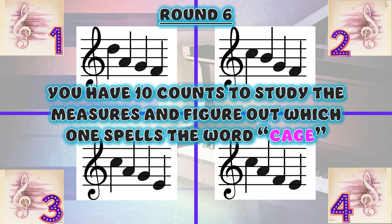Round six. You have ten counts to study the measures and figure out which one spells the word 'cage.'